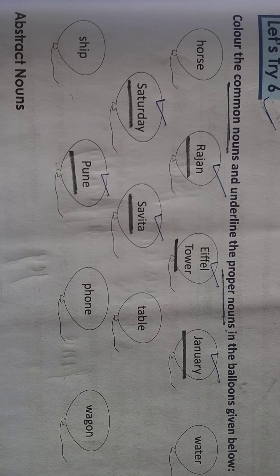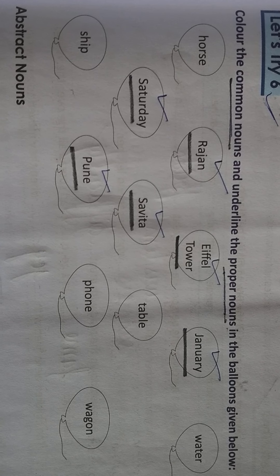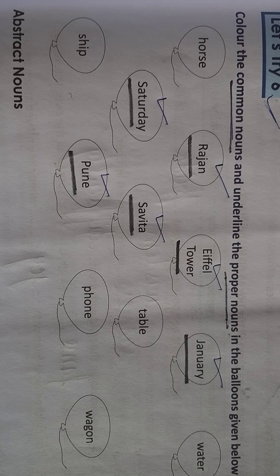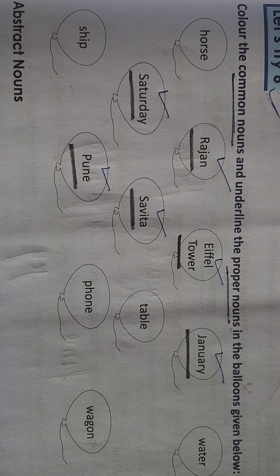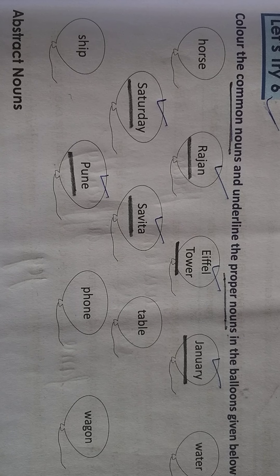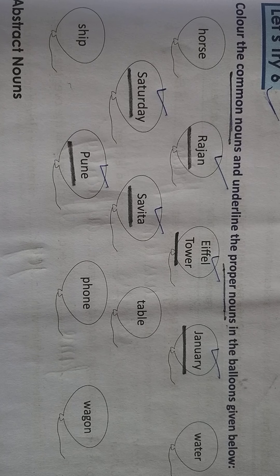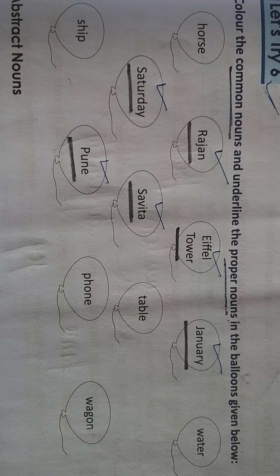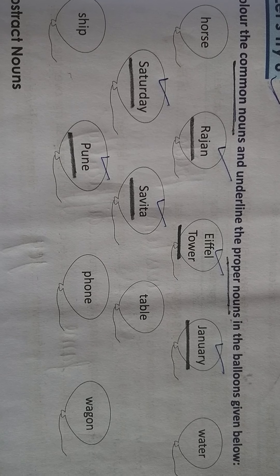Table — it is not a specific thing, so that's why it's a common noun and you will colour it. Shape is a common noun. Pune is also a proper noun. Phone and Band — both are common nouns.